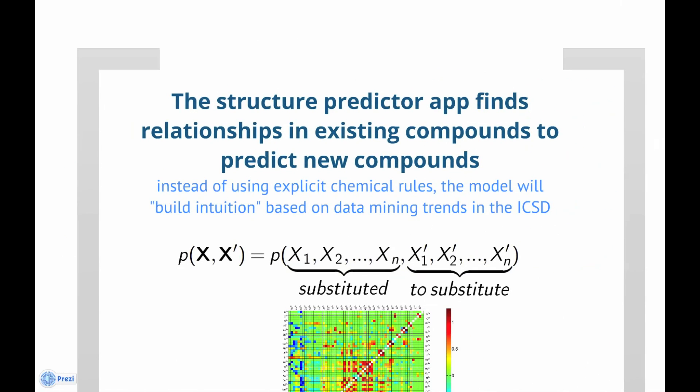The Substitution Predictor app builds a mathematical model of chemical substitution rules by data mining the ICSD database, and then uses those rules to predict new compounds.